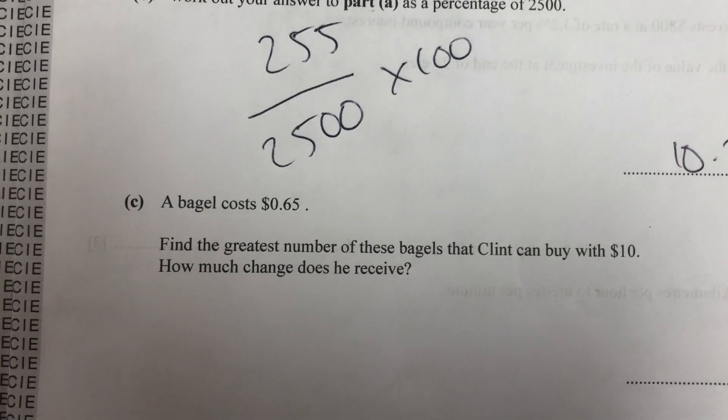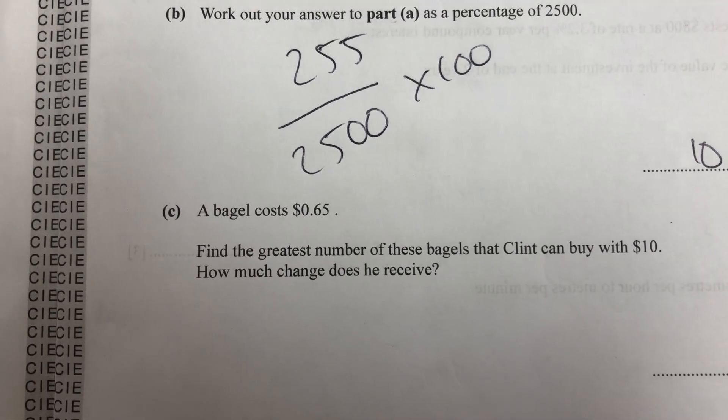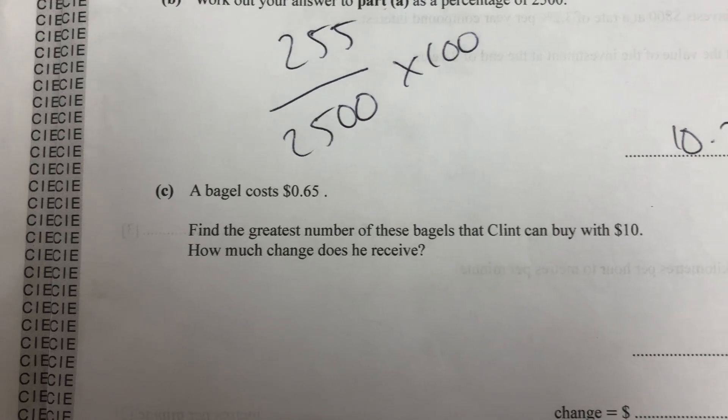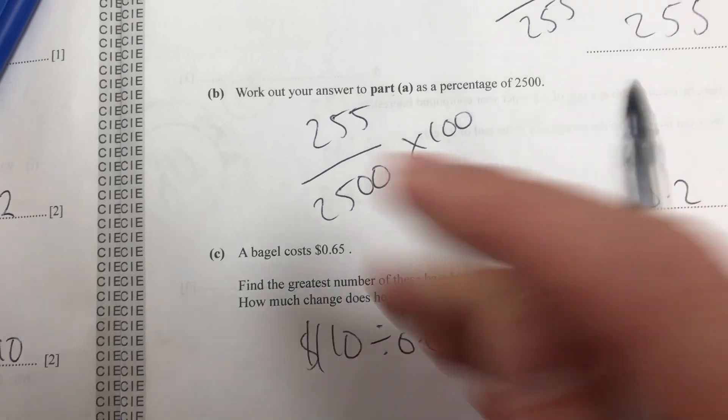Then it asks us, bagel costs 0.65, find the greatest number of these bagels that Clint can buy with $10. So we're going to do $10 divided by 0.65.